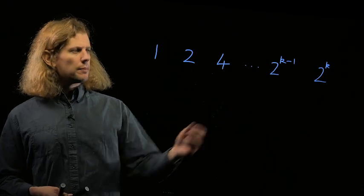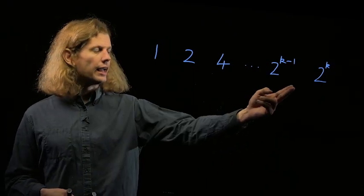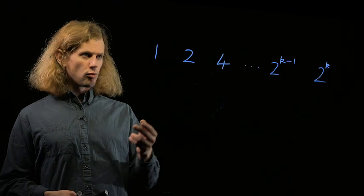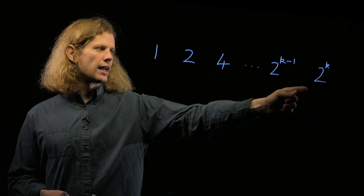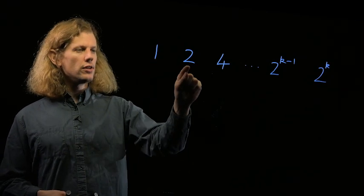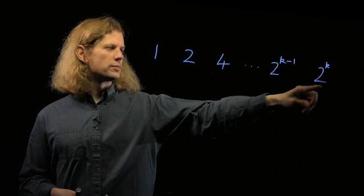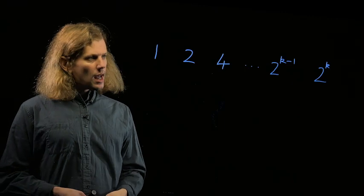So I'm going to start by thinking about powers of 2, like 2 to the k, because their factors are things we can just write in a list. The factors of 2 to the k are the powers of 2 up to 2 to the k itself. So I've got 2 to the 0, which is 1, 2 to the 1, which is 2, up to 2 to the k itself.